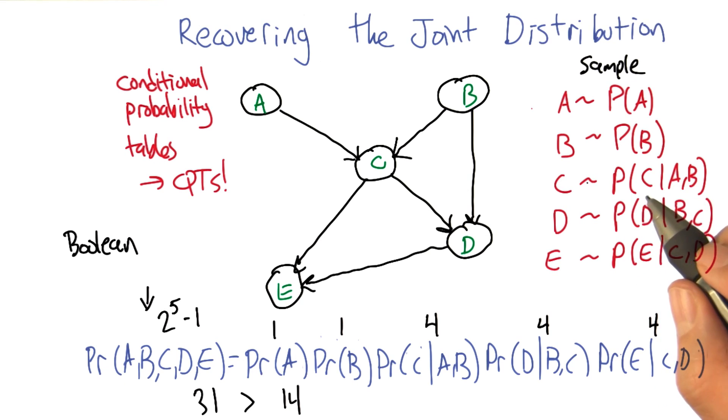So then, just like with the joint distribution where you have this exponential growth because you need to know everything, here you have exponential growth that only depends upon the number of parents you have. If you have no parents, then it's constant. If you have parents, then it grows exponentially with the number of parents. So the fewer parents, the more compact the distribution ends up being.